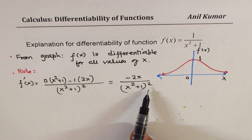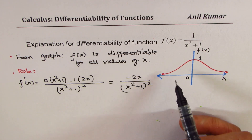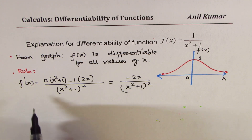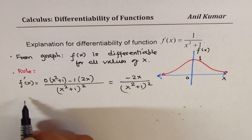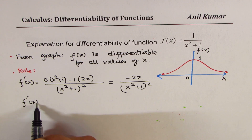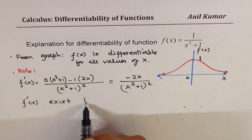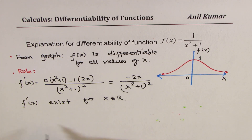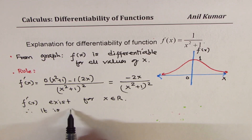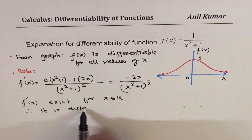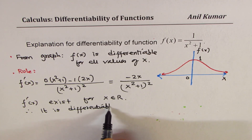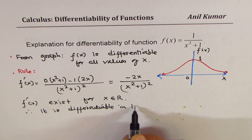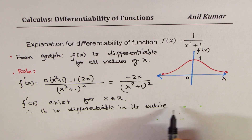The denominator is positive. The numerator is positive on the left side and negative on the right. We see that f'(x) exists for x belonging to real numbers, and therefore it is differentiable in its entire domain.